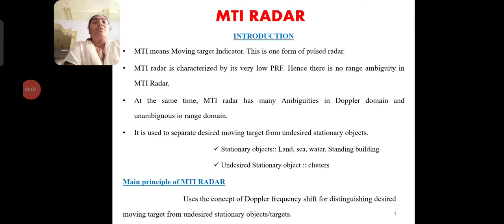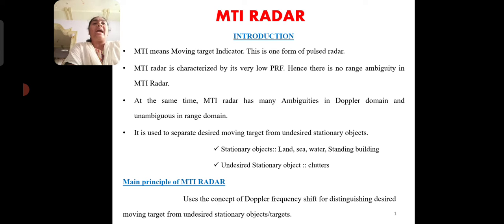Today we are going to discuss MTI radars. MTI radar means Moving Target Indicator, and it is one form of the pulse radar. MTI radar is characterized by its very low PRF. There is no range ambiguity in MTI radars; at the same time, MTI radars have many ambiguities in the Doppler domain and unambiguities in the range domain.